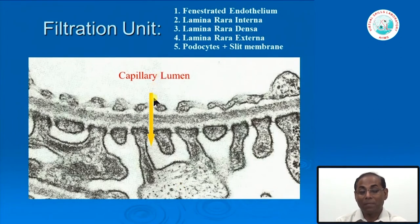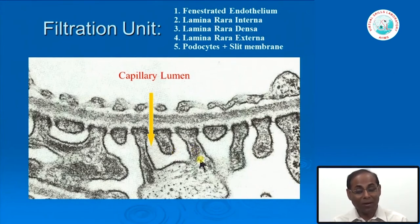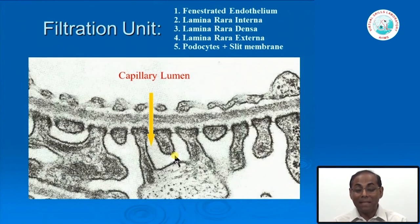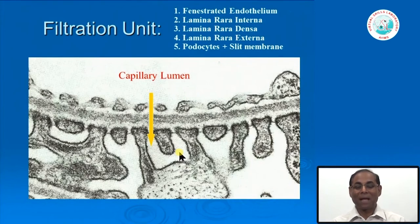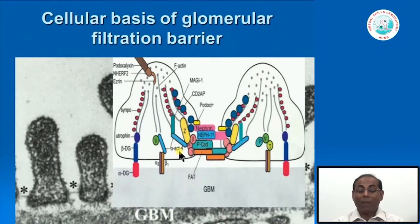From the capillary lumen the filtration takes place, and fluid goes to the sub-podocytic space. Podocytes are not passive—they have a huge contractile element; when a podocyte contracts, the sub-podocytic space decreases, increasing hydrostatic pressure on that side of the glomerulus, meaning the filtration rate can be controlled by the podocytes themselves through their contractile function. The sub-podocytic space and pressure are important in regulating the glomerular filtration rate.